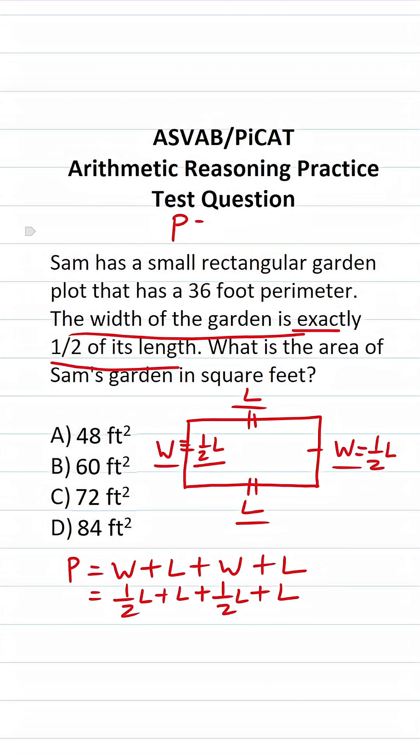What's more, we know the perimeter of this rectangular garden is 36 feet. So we can replace P here with 36. And now we can solve for L. Let's add these up. L and L is going to be 2L. Half L, half L is going to be 1L. So this becomes 36 equals 3L.